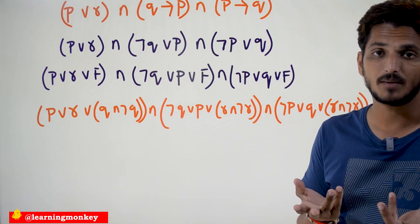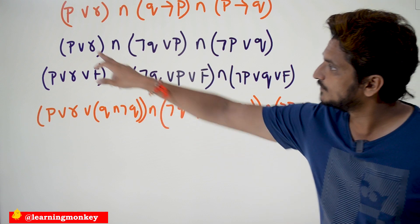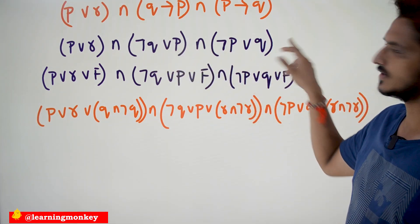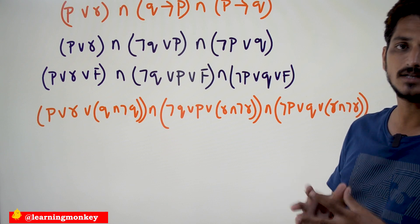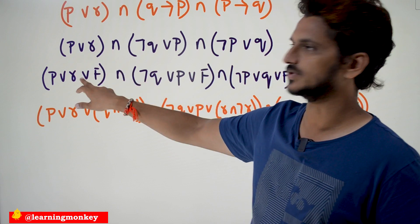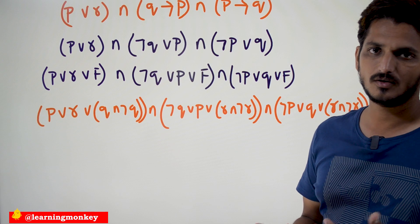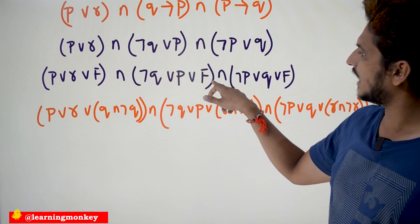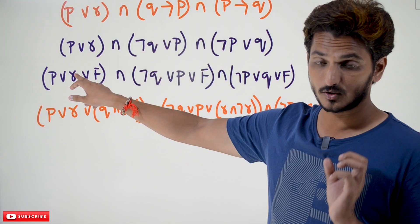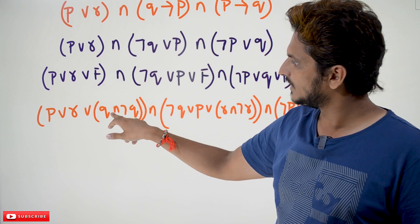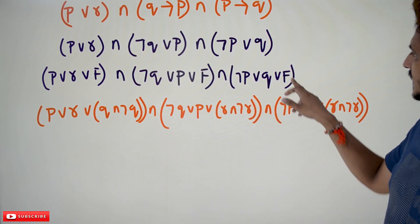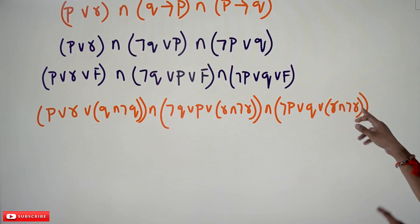We apply the same method as the above example — using false to bring in missing variables. What is the missing variable in the first term? q. What is the missing variable in the second term? r. What is the missing variable in the third term? r is the missing variable. So add false — p disjunction r disjunction false, same equation; adding false will not change the equation. Similarly, add false to the other terms. Instead of false, place q conjunction negation q for the first term, and r conjunction negation r for the second and third terms.